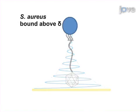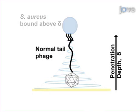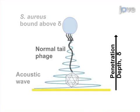When bacteria are attached to the long, flexible tails of the lytic phage, the distance between the attached cells and the sensor surface is larger than the penetration of the QCM's acoustic wave. Therefore, the signal of the binding event is not generated.